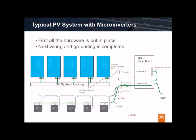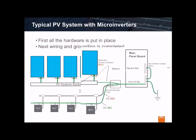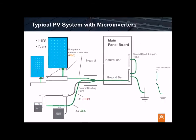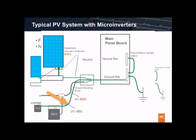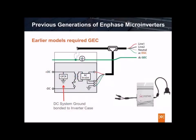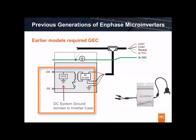Previously, in order to satisfy NEC requirements, microinverter systems were installed with both a GEC to ground the DC power system of the microinverter, and a separate EGC to ground the metal case of the microinverter. For previous generations of Enphase microinverters, a DC-GEC was still required because the input DC circuit was grounded through the ground fault detection and interrupt circuit to the microinverter case, which was the termination point of the DC circuit.